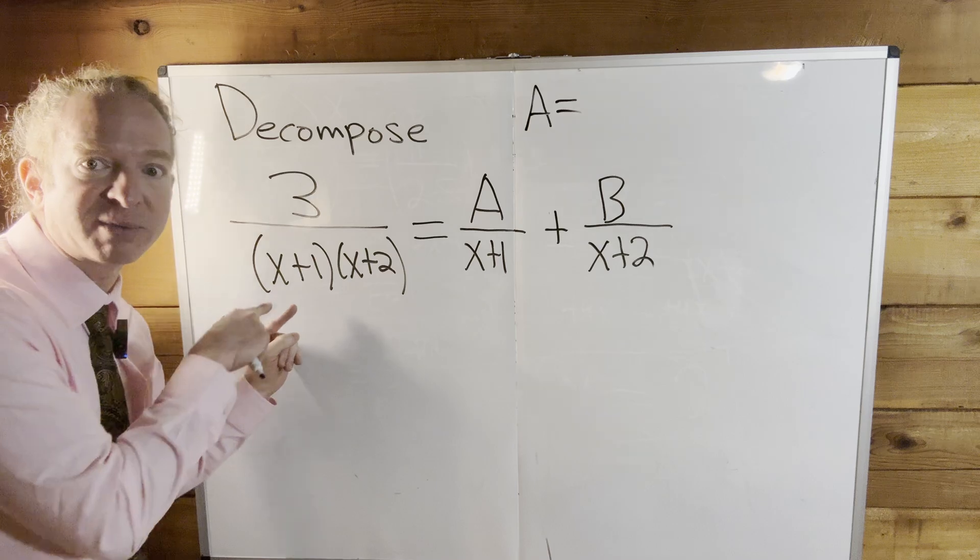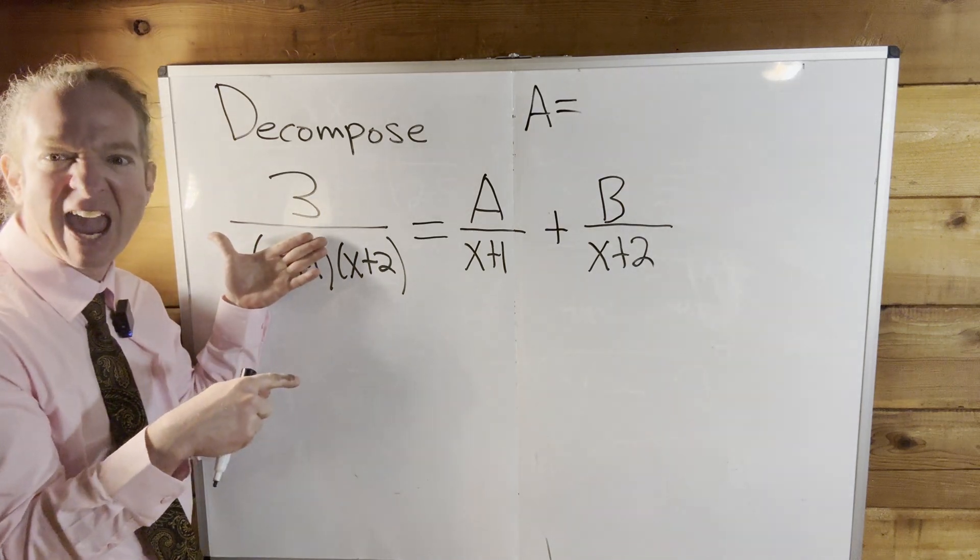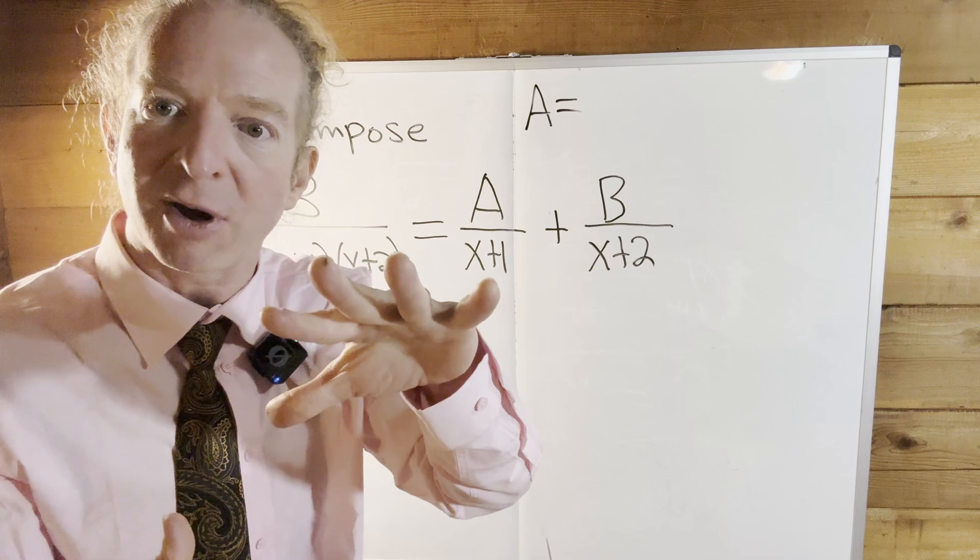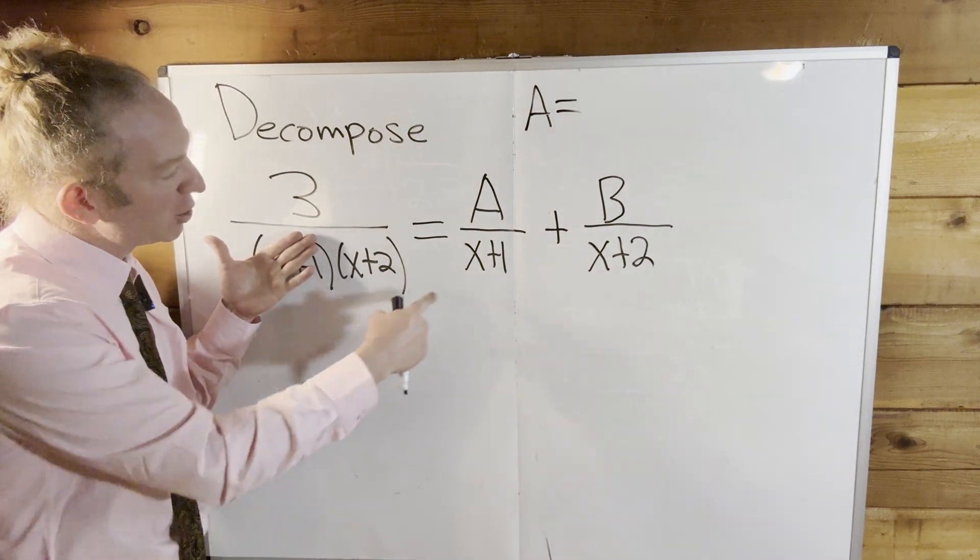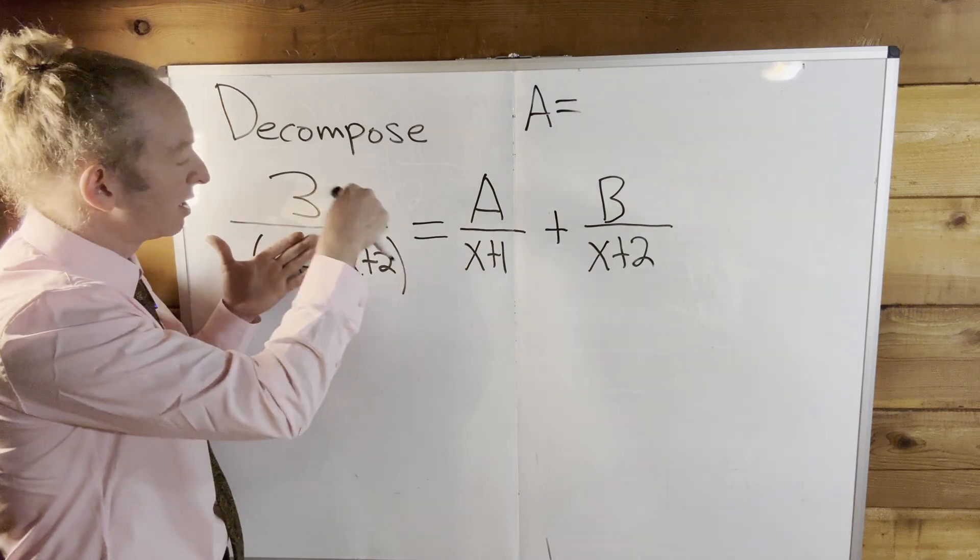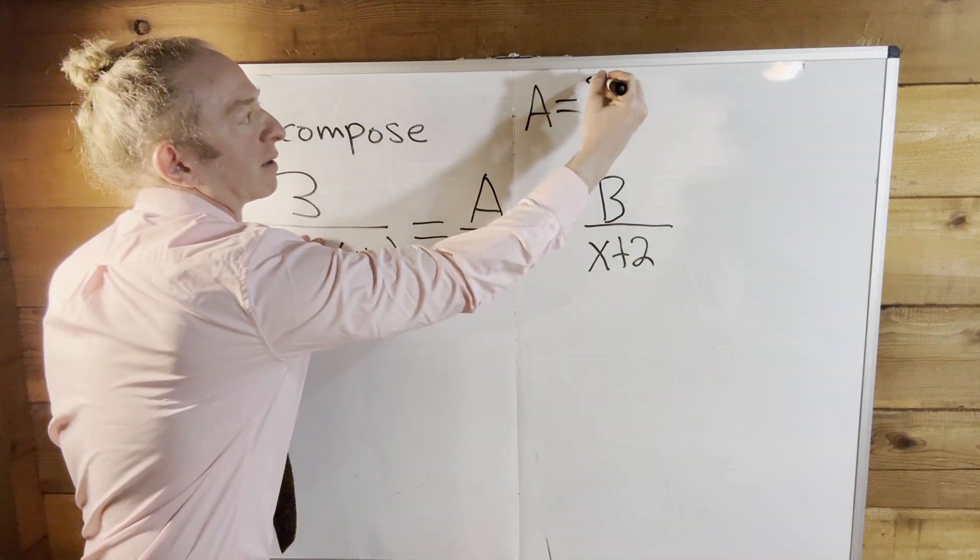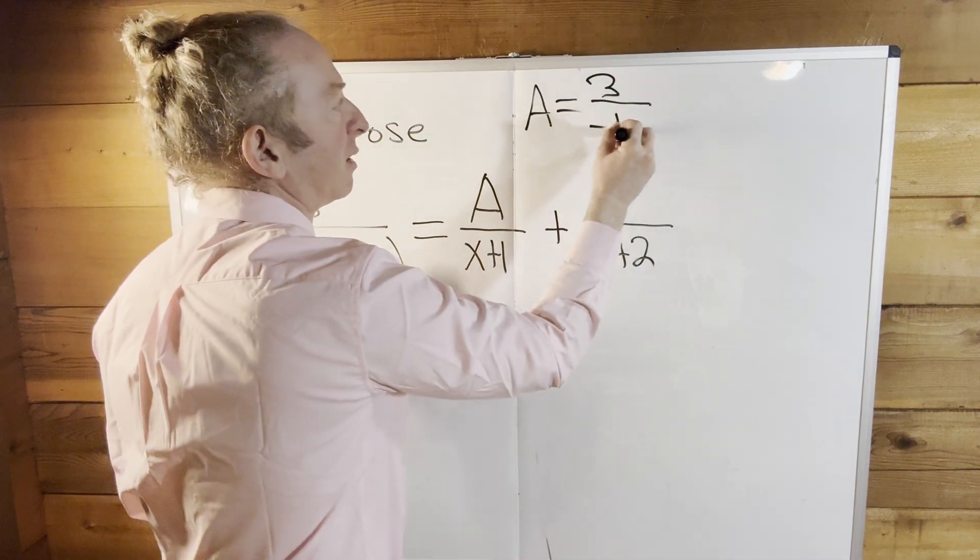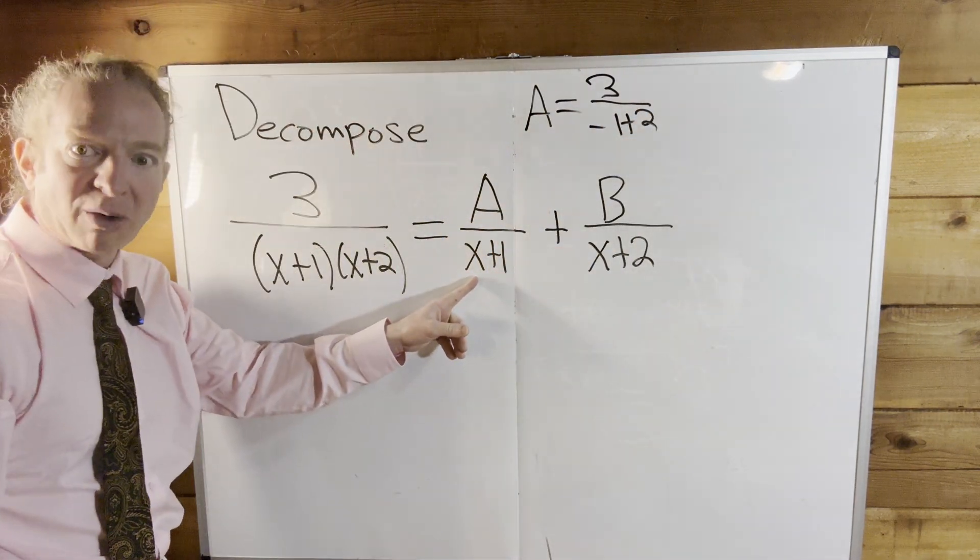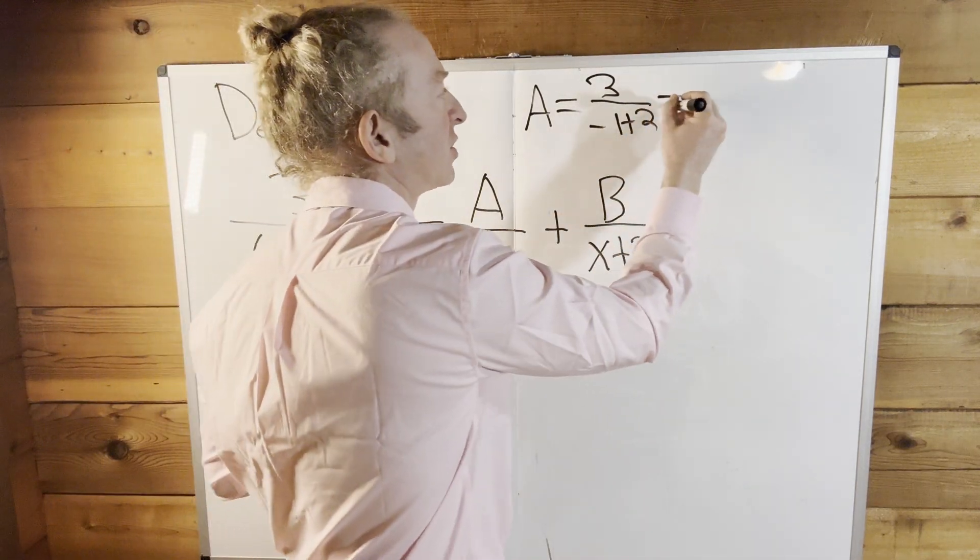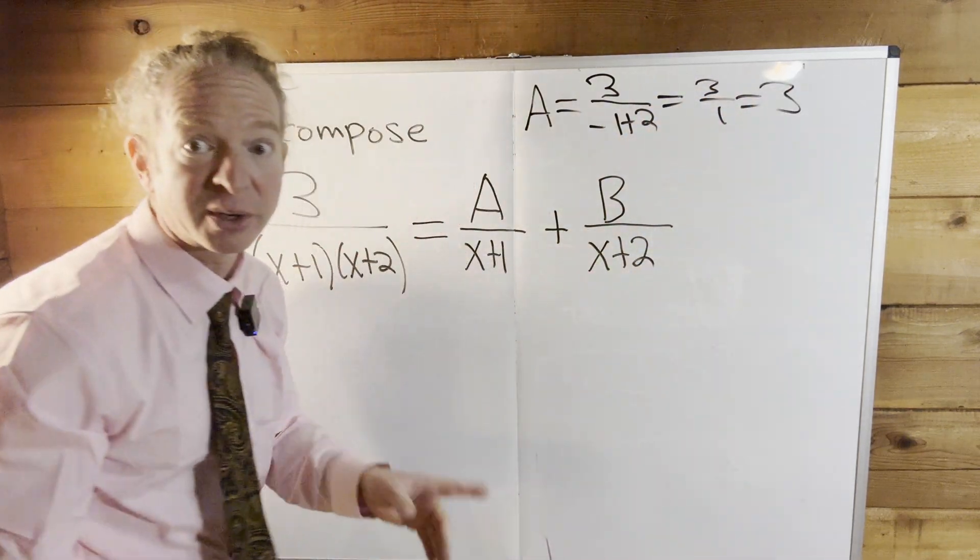So then you come over here and you cover it up with your hand or your finger. You cover it up. And then you plug in what causes the problem. So negative 1 causes a problem. So it's 3. Negative 1 plus 2. So you look at what's under A, you cover it up and you plug in the issue. That's 3 over 1, so it's 3. That's how pros do it.